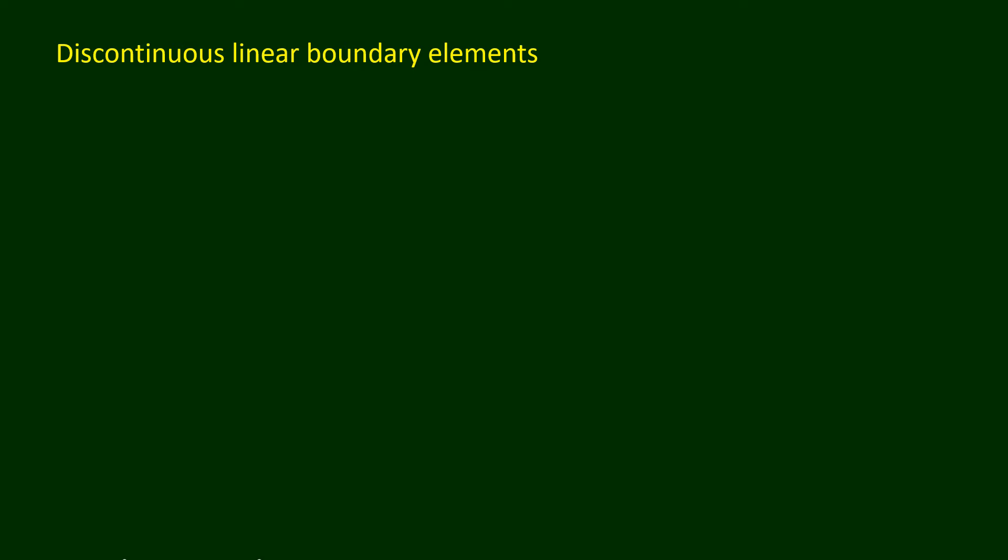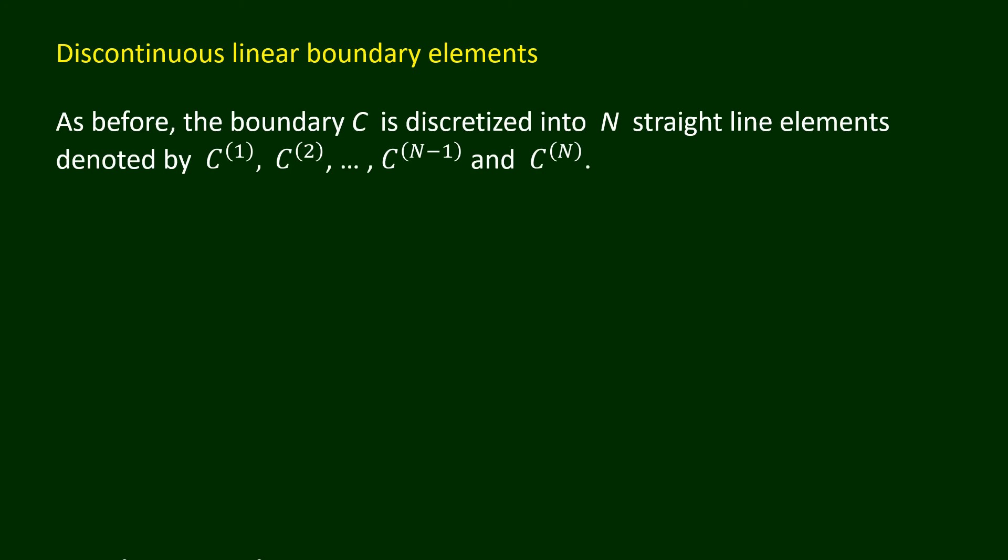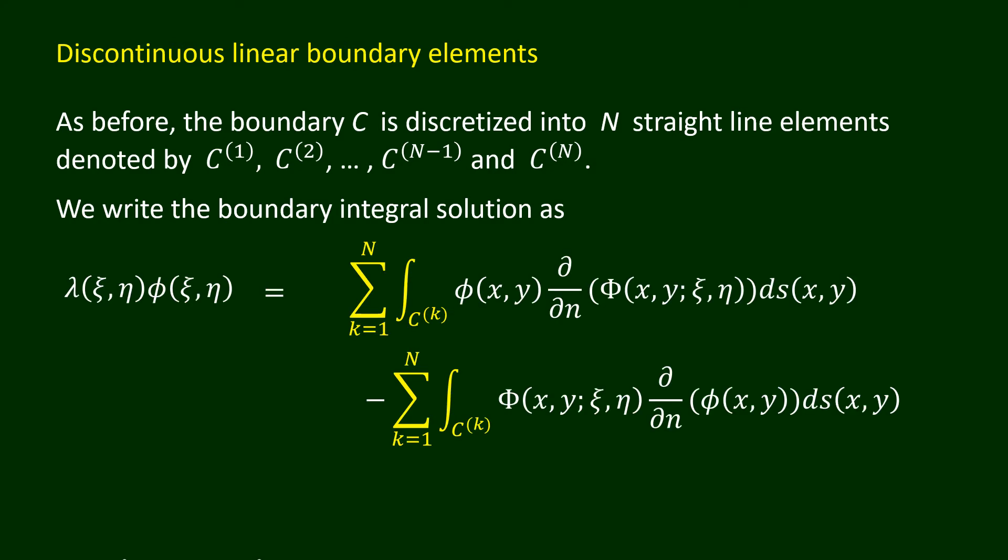As before, the boundary C is discretized into N straight line elements denoted by C1, C2, and so on until CN. The integral over the boundary C in the boundary integral solution is then written as the sum of integrals over all the straight line elements.